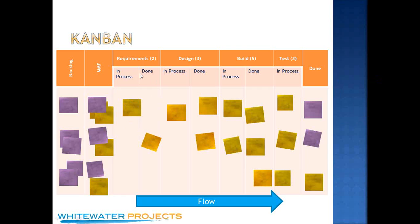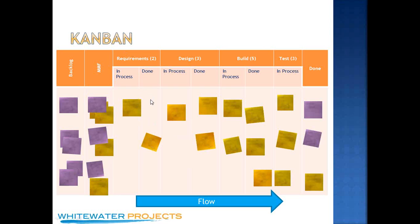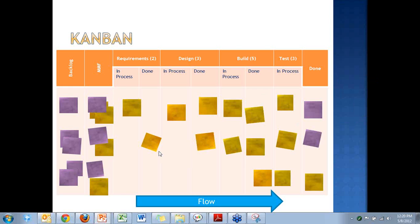This person has two pieces of work they're limited to. Only when the design people pull one in can the requirements person now pull another card in. If they move one over to done, they're waiting — they're stopped. As an organization, we have self-imposed this rule that says only two pieces of work in progress at any time. There are lots of good reasons for that. If you come to the class, we can go over why that works.